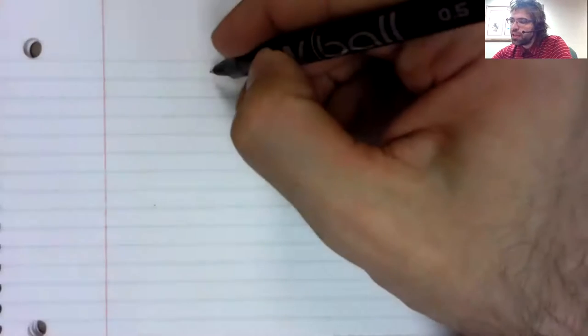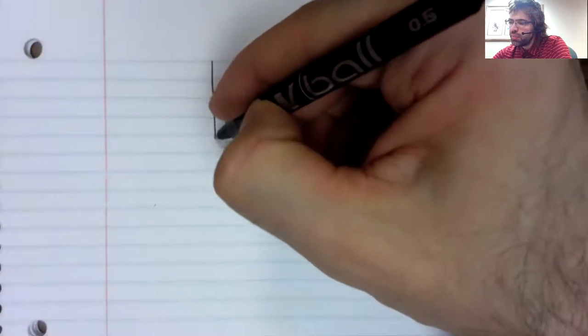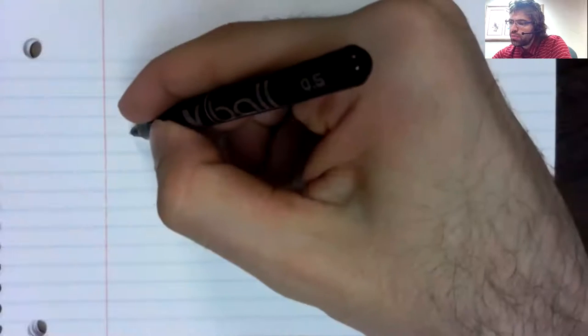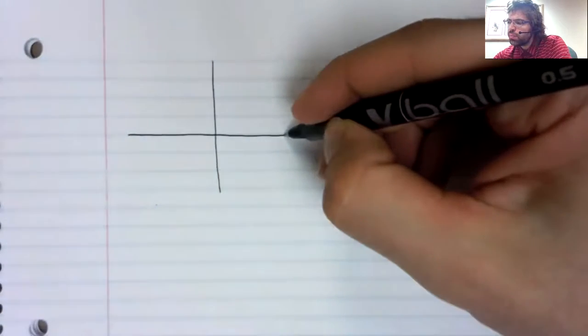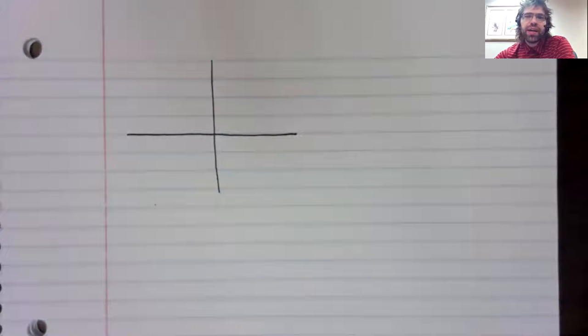According to legend, this is how the Cartesian plane came to be. The great mathematician René Descartes was lying in his bed, very sick,